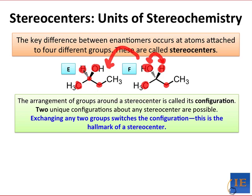Same with E to F — we can take the H in E, exchange it with the OH, and generate F from E. The hallmark of a stereocenter is that exchanging two of the groups leads to a different molecule, which is a stereoisomer of the original.